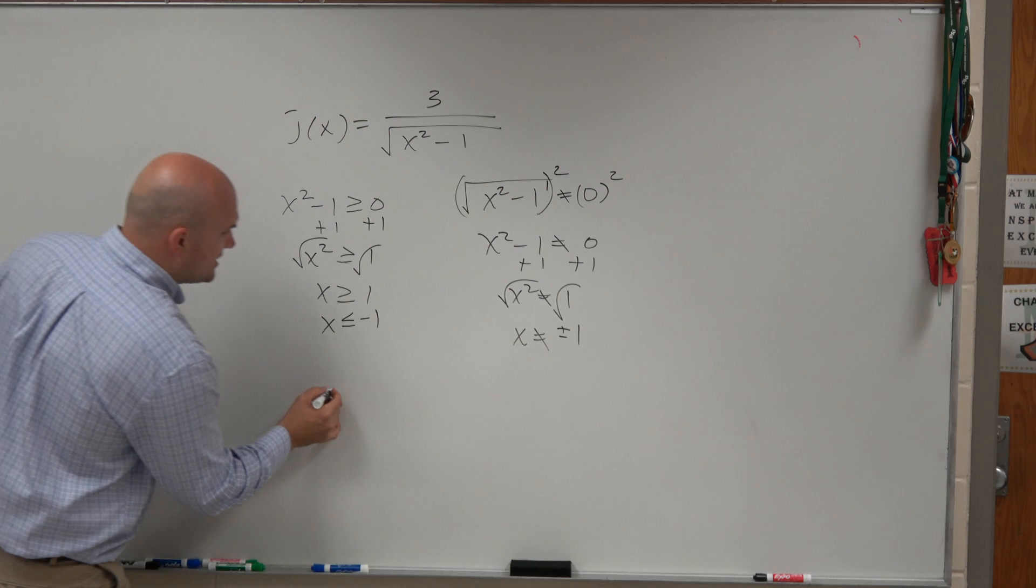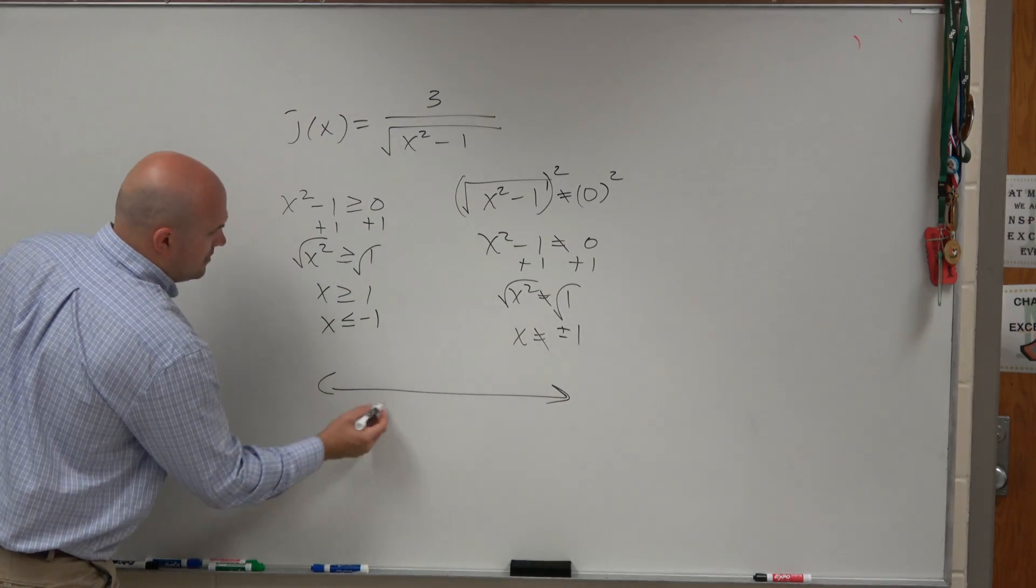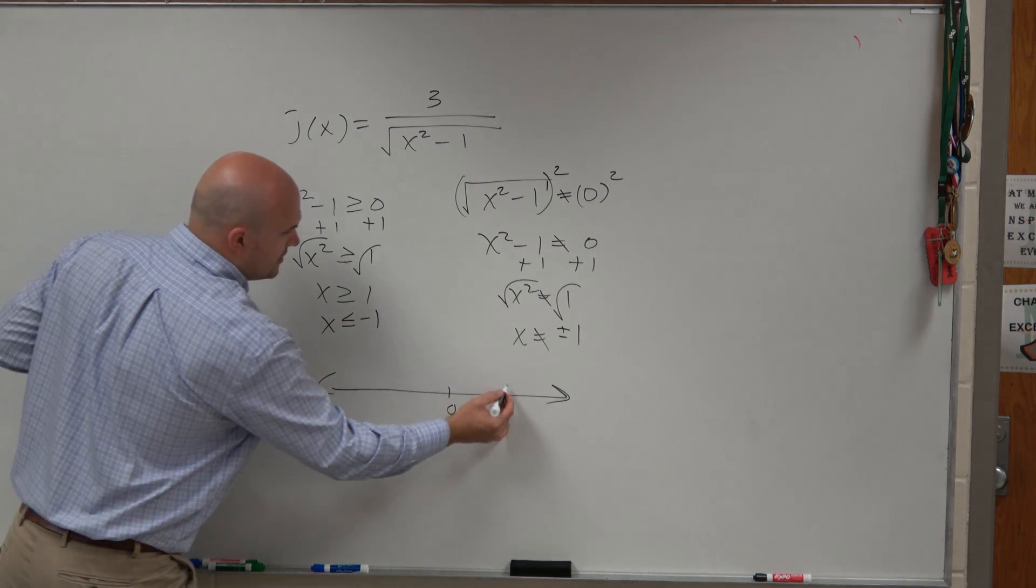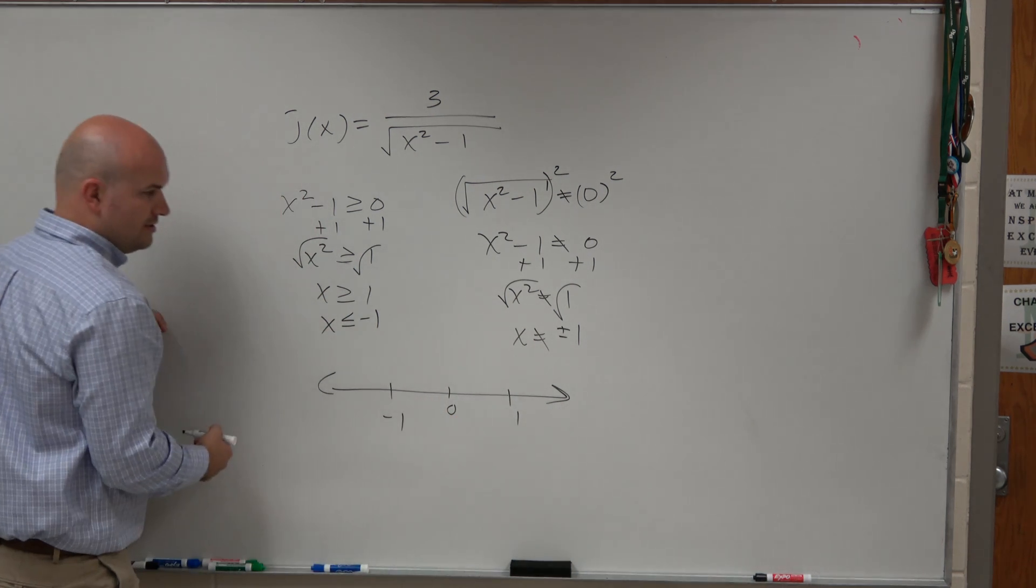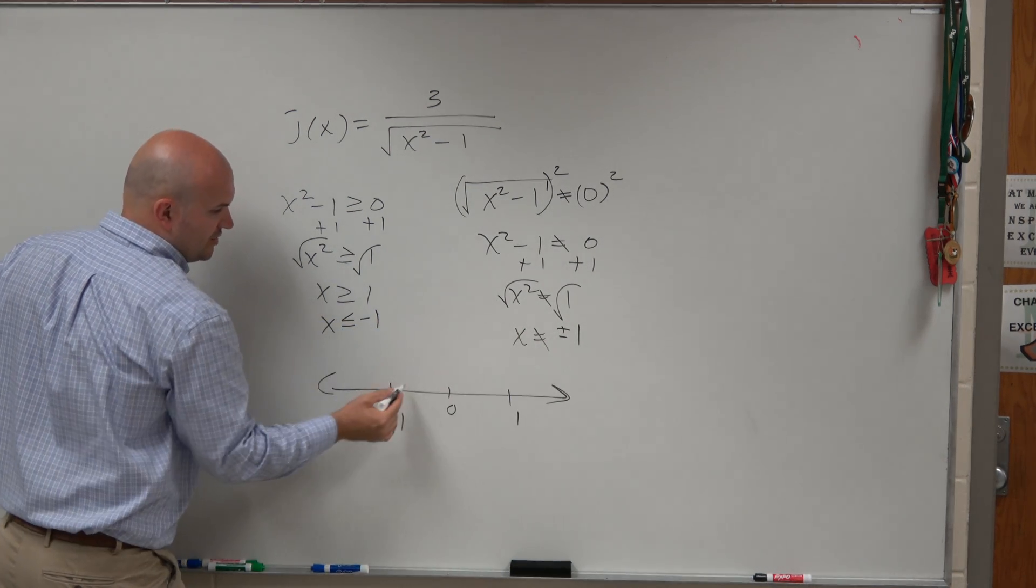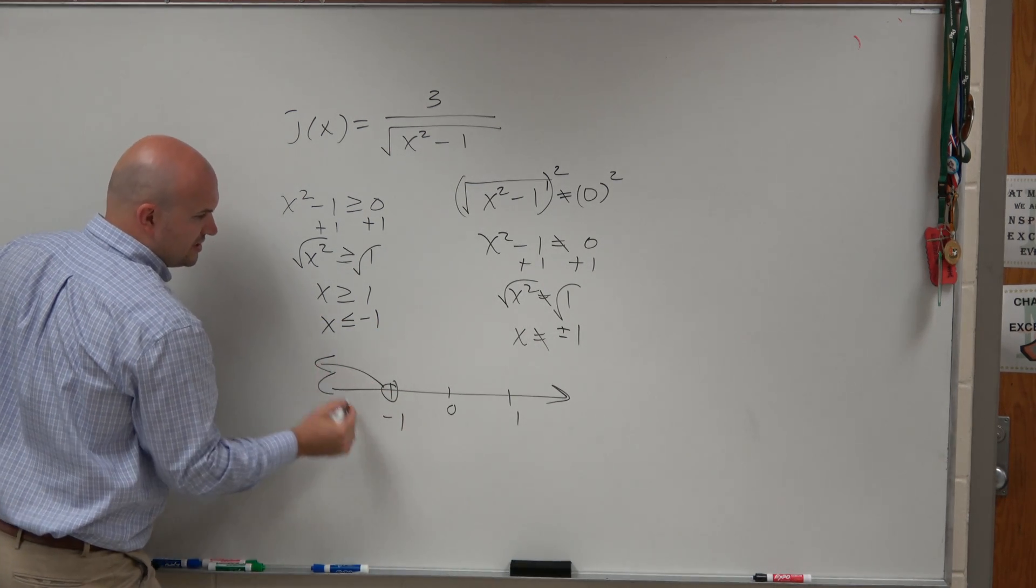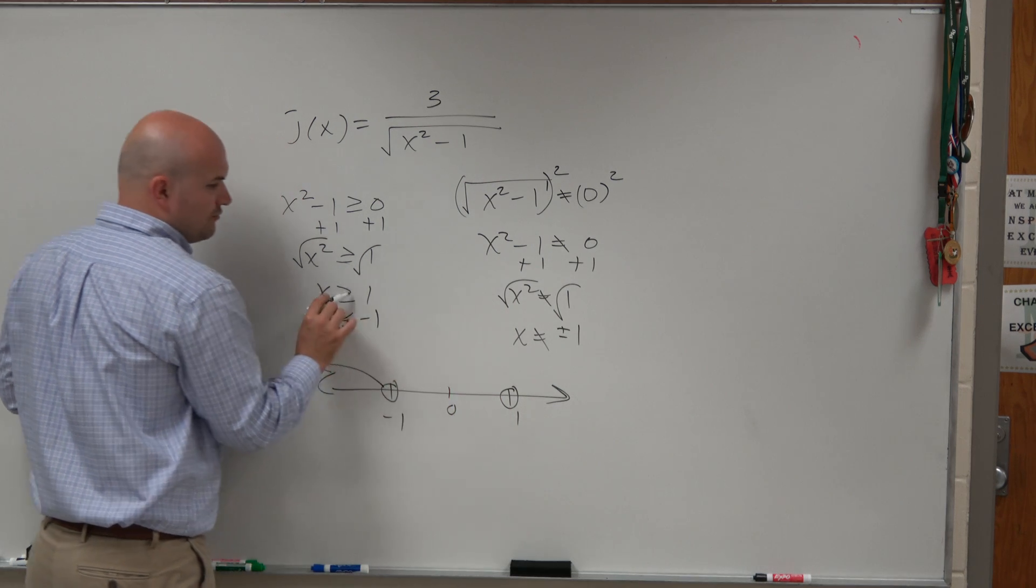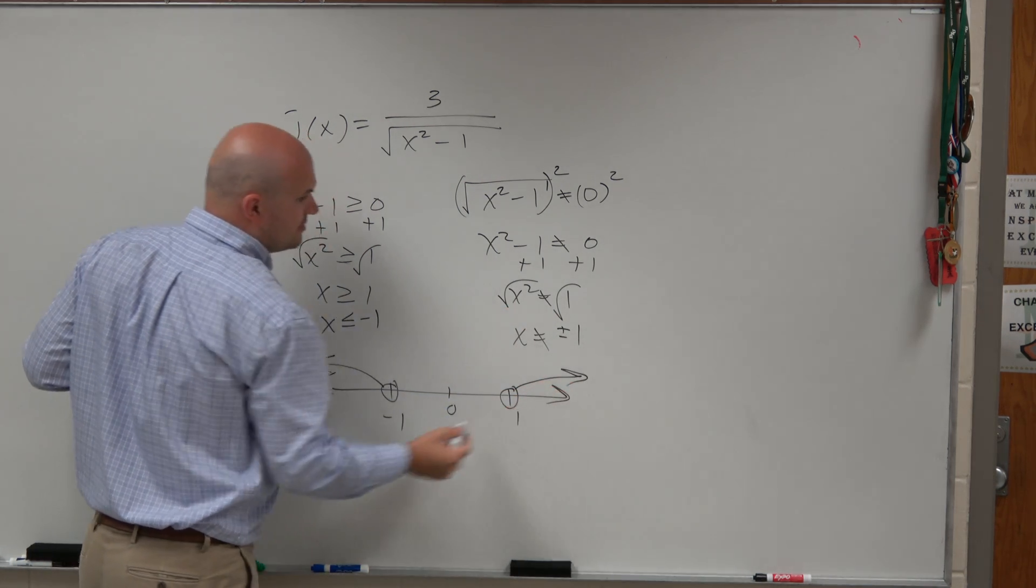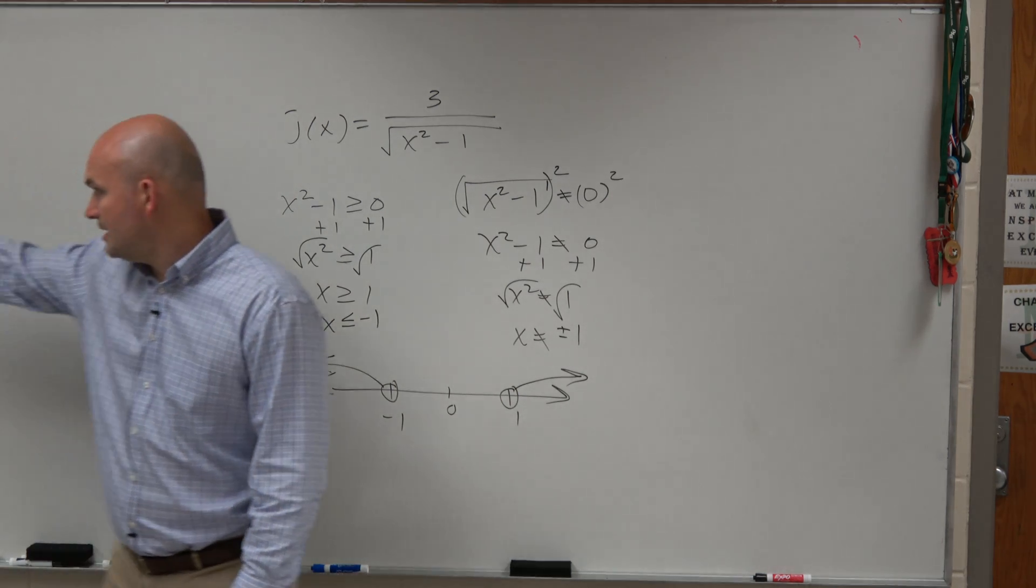So when we look at this, we basically say, all right, x is, so here's 0, here's 1, here's negative 1. x has to be less than or equal to negative 1, but it can't equal negative 1. So it's going to be an open circle going to the left. Positive 1 has to be x is greater than positive 1, but it can't actually equal positive 1. So it's going to look like that.